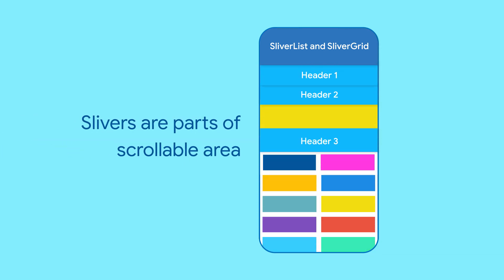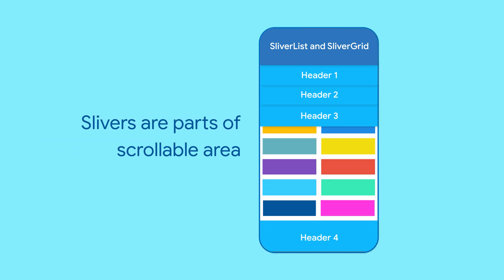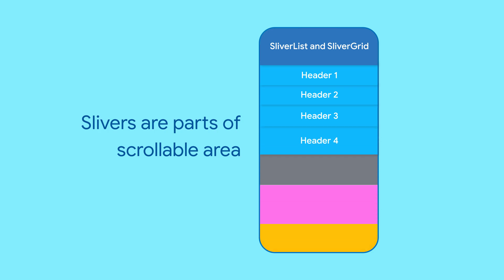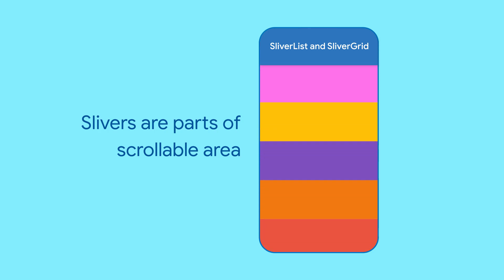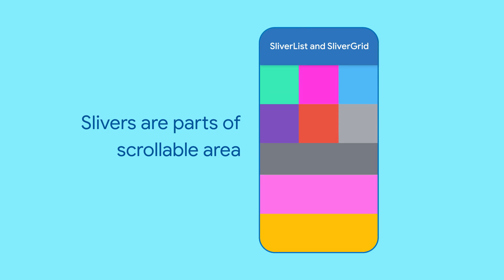A sliver is just a portion of a scrollable area and goes inside a CustomScrollView. Because slivers can lazily build each item just as it scrolls into view, slivers are particularly useful for efficiently scrolling through large numbers of children.